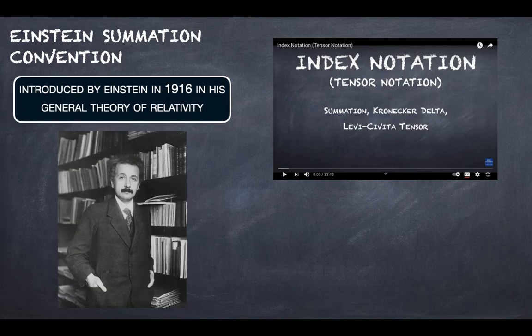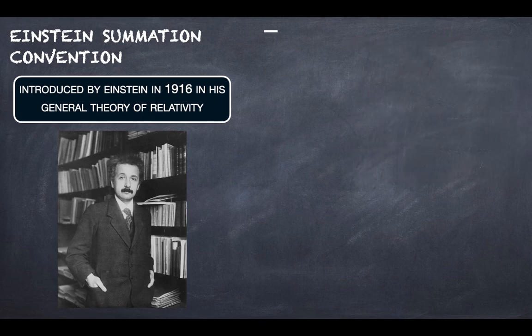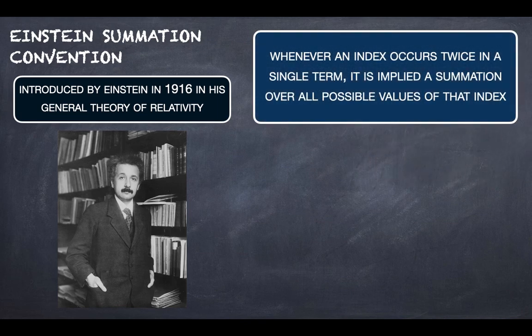So the convention was introduced by Einstein in 1916 in his general theory of relativity, and it states that whenever an index occurs twice in a single term, it is implied a summation over all possible values of that index.